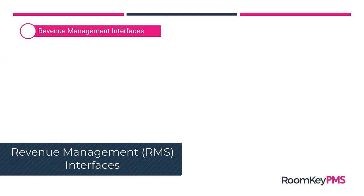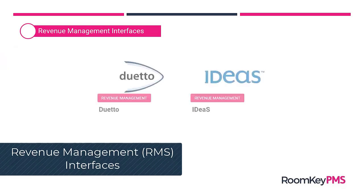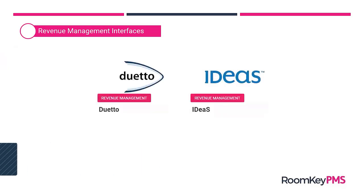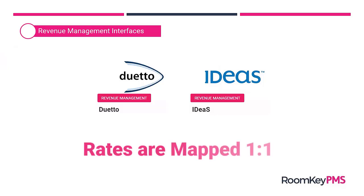We work with two platforms, Duetto and Ideas, to manage revenue. In much the same way that we connect with our connectivity partners on a one-to-one ratio, where rates are connected one-to-one with the rate plans created on that connectivity partner platform, we do the same method with our RMS connections or RMS interfaces here with Duetto and Ideas.